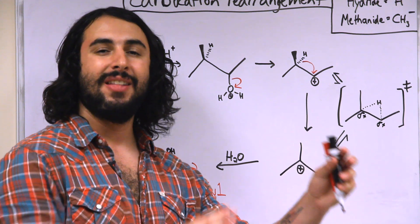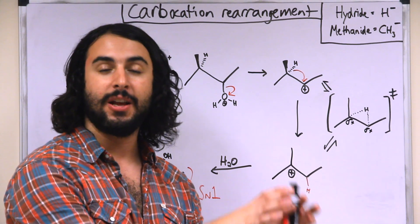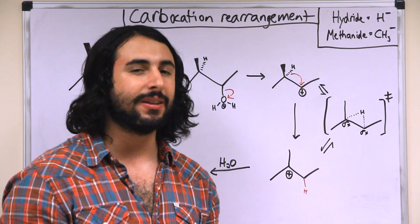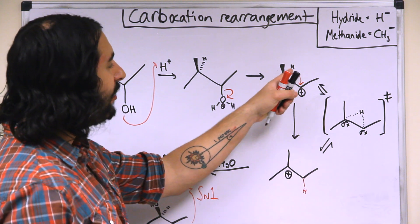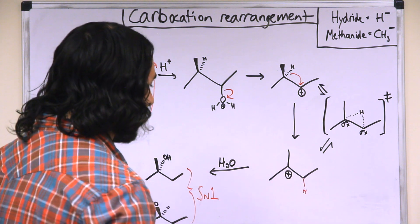So if we have a secondary carbocation that's rather far away from a tertiary or quaternary carbon, this probably isn't going to happen. But because there is a tertiary carbon next door, this hydride is able to migrate one carbon over. So now we have that tertiary carbocation.